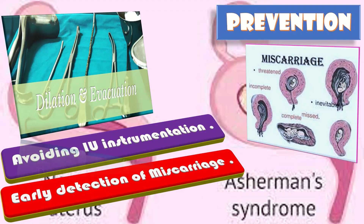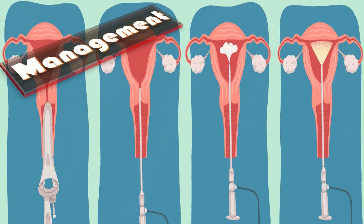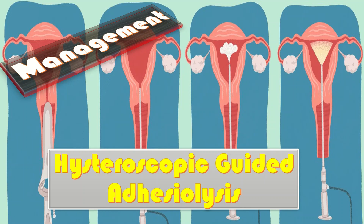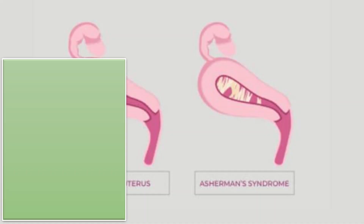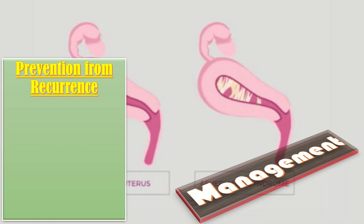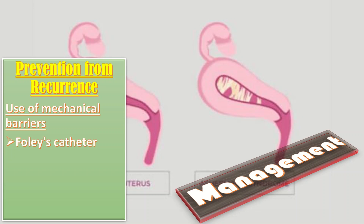How to manage a case of Asherman syndrome? First, by hysteroscopic-guided adhesiolysis, which is done with or without conjunction of laparoscopy as a protective measure against uterine perforation. Another line of management is preventing the recurrence of Asherman syndrome by use of mechanical barriers.